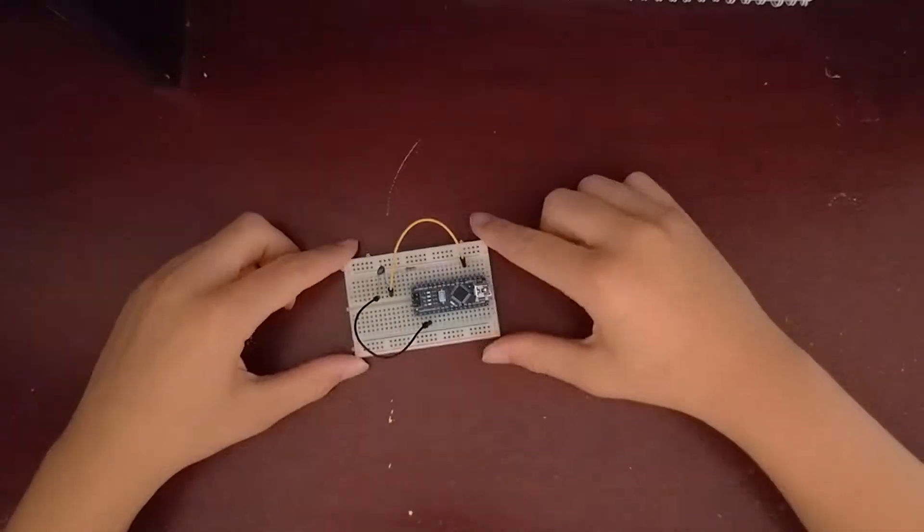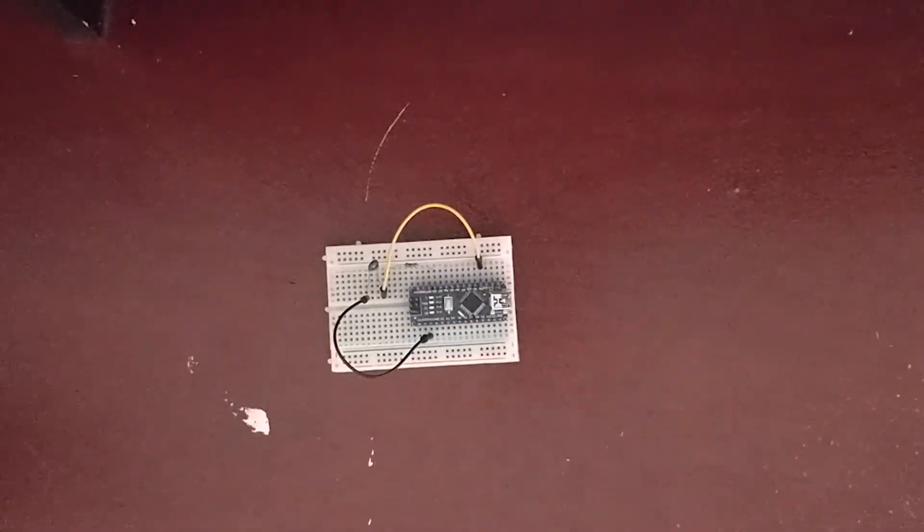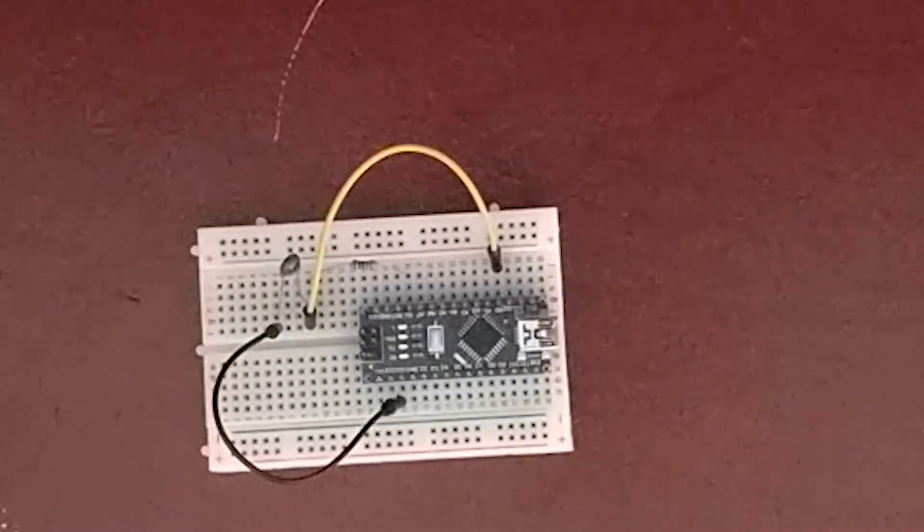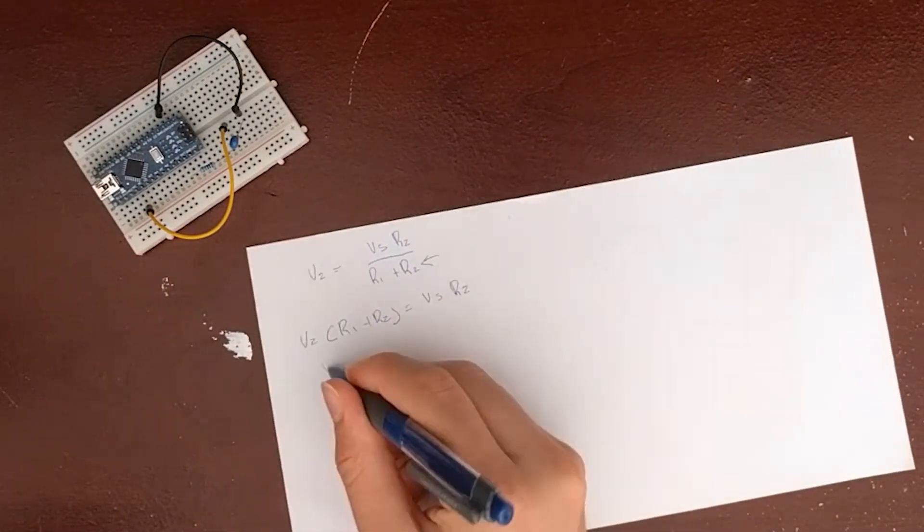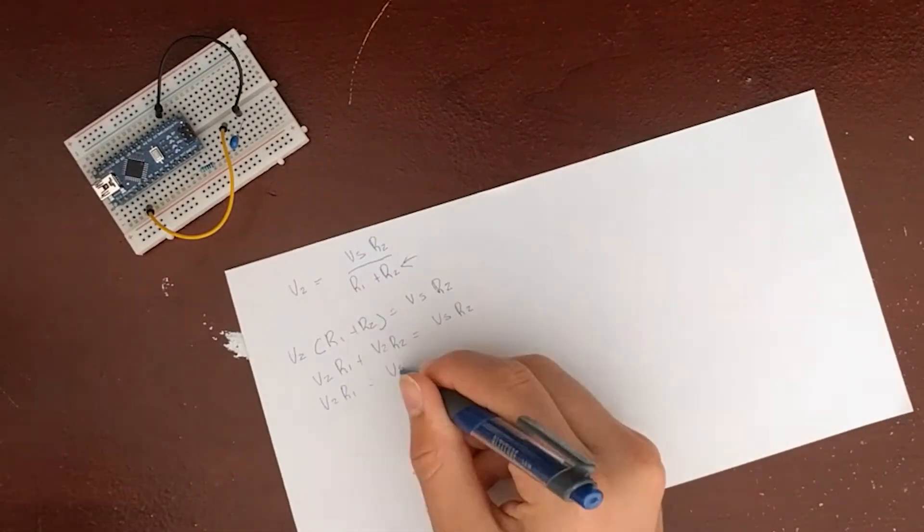Finally, connect the wire from the junction of the two resistors to analog pin 0 of the Arduino. This will allow us to read the voltage V2. Let's rearrange our previous formula to make it easier to calculate the resistance.